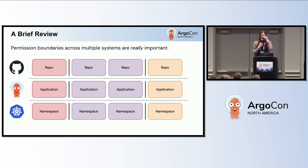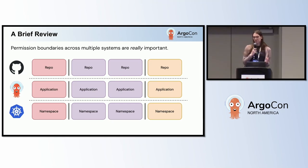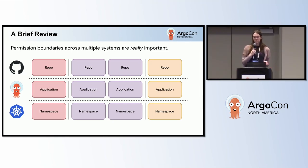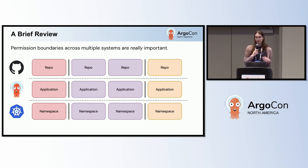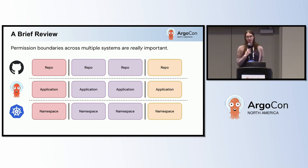First of all, I want to start with some fundamentals. Permission boundaries are really important across multiple systems. In a GitOps setup with Argo CD, you're going to have multiple systems where you need to control these permission boundaries.